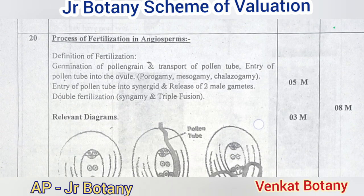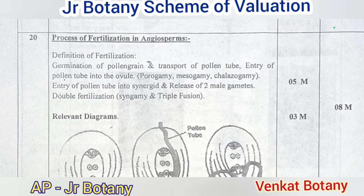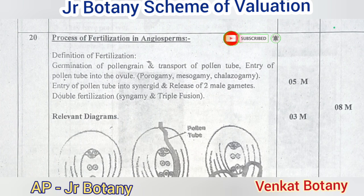Question number 20: describe the process of fertilization in angiosperms. The definition of fertilization is required. The entry of the pollen tube involves porogamy, mesogamy, and chalazogamy. Entry of the pollen tube, intrusion into the ovule, and release of two male gametes. Double fertilization — the plants cover is five marks with relevant diagrams.